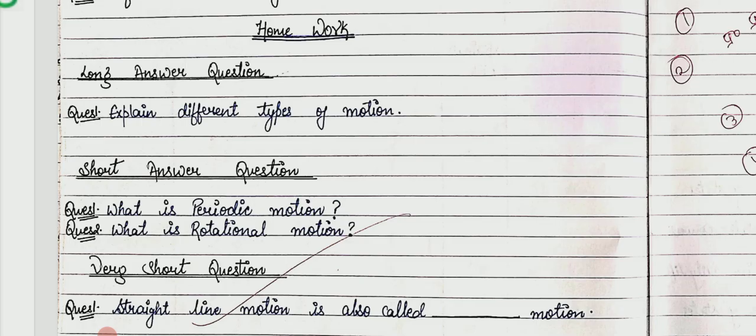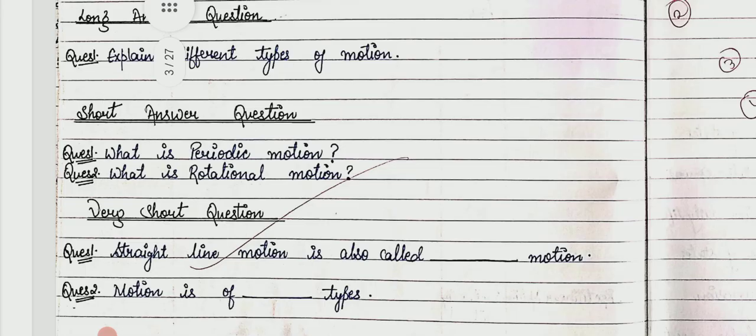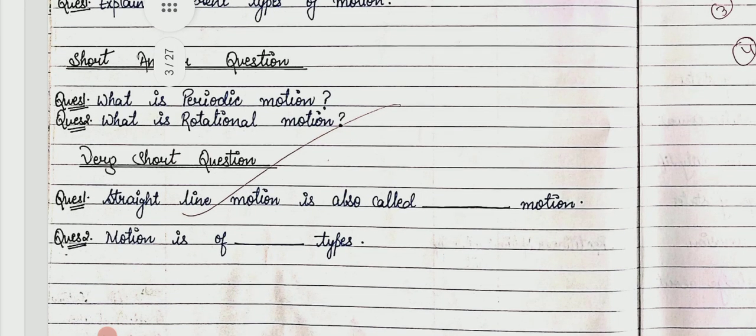Short answer questions: first, what is periodic motion? Second, what is rotational motion? Very short questions or fill in the blanks: first, straight line motion is called blank motion; second, blank motion is of blank type.